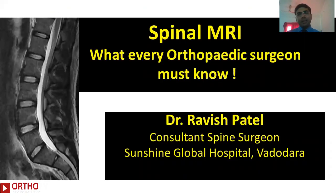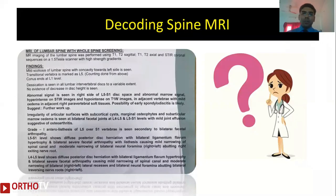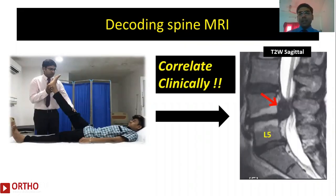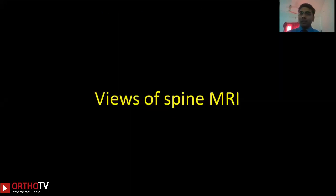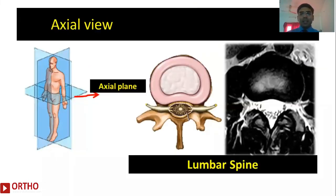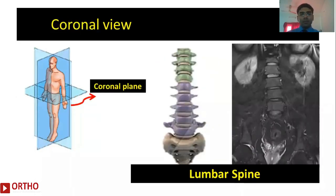With this, let me start my today's talk on spinal MRI — what every orthopedic surgeon must know. Decoding spine MRI doesn't mean reading an MRI report; it actually means trying to correlate your clinically significant findings with radiological findings. There are three main views of spine MRI: the sagittal view where we look at the spine from the side, the axial view which is a cut-section view of the spine, and the coronal view where we visualize the spine from the front.